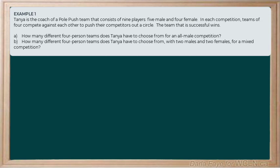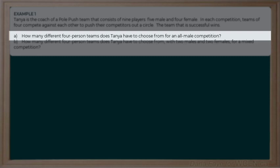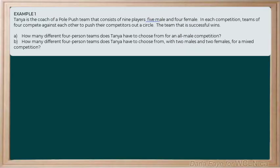In this scenario, there is an all-male competition. So in part A, Tanya needs to create a four-person team chosen for the male competition. In part B, it asks how many different four-person teams could Tanya create with two males and two females for the mixed competition. Let's start with part A. We're looking to make an all-male team, so n is going to be equal to five and r will be equal to four.